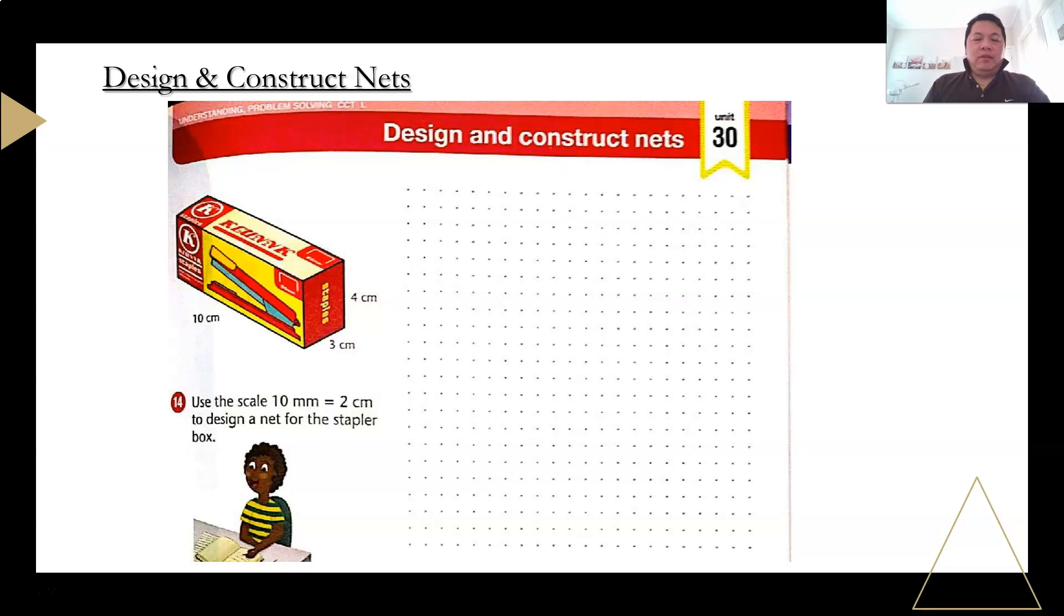Now moving on to the next one. We are required to draw a net of this box here. And they are given a scale. The scale is given here. 10 mm on the paper represents 2 cm on the box. So I'm going to draw the first part here, which is this rectangle. 10 cm, which is 5 of this, which is 50 mm. So, and then the height is 4 cm, which is just 2 cm. On it. Because 4 cm is actually twice of this. That's why it's 20 mm. So that's how I actually got this based on the scale.